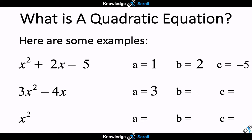In the second one we have 3x squared take away 4x. a in this case is 3, b is negative 4 and since there is no c term we will leave it as 0. In the last one x squared only has a value for the a term which is again 1. b and c are 0.